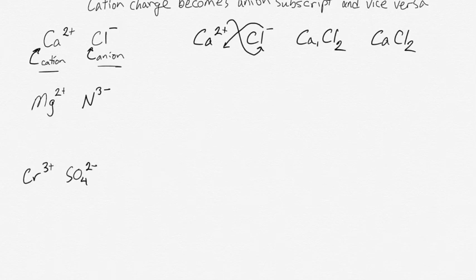Similar thing happens with magnesium ions and nitride ions. We have Mg2+ and N3-, and we end up with Mg3N2.